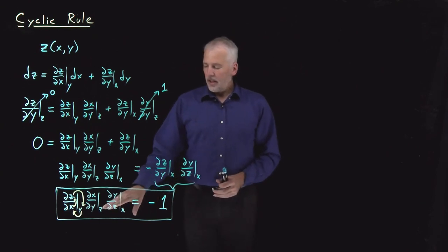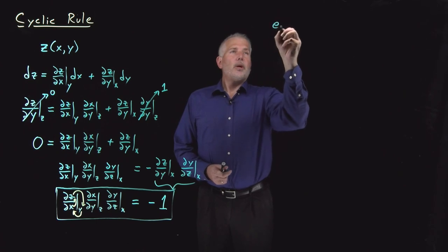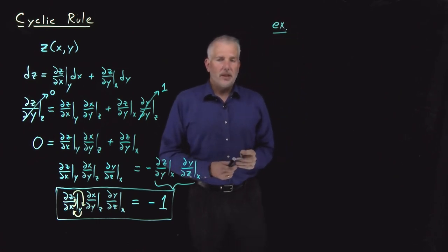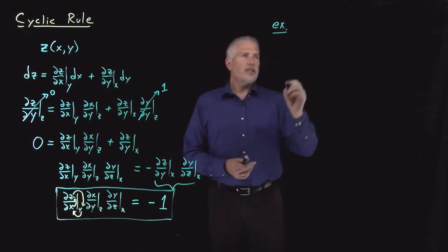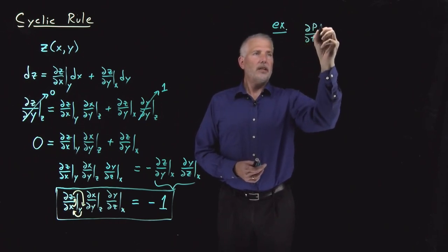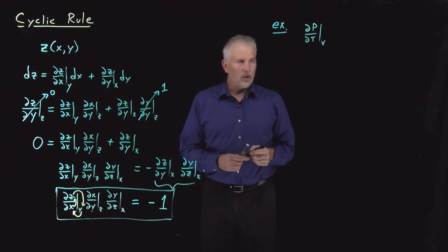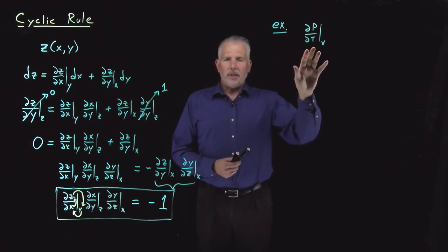So that's a very useful partial derivative identity. To show you why it's useful, what sort of circumstances it can be useful in, let's ask ourselves a question like, what is ∂p/∂T at constant V?